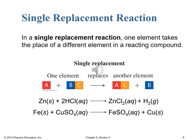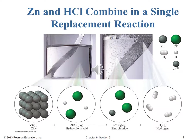In our course, single replacement reactions are fairly easy to identify because you'll always have an element and a compound on the left side and an element and a compound on the right side. Here we see a particle diagram of that process: zinc metal reacting with hydrochloric acid to form zinc chloride solution and hydrogen gas. You can see those hydrogen gas bubbles on the surface of the zinc strip as well as bubbling up through the aqueous solution — a classic single replacement reaction.